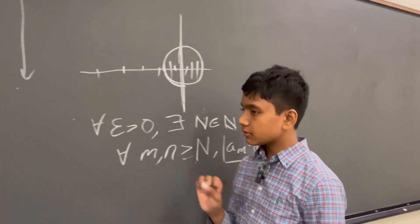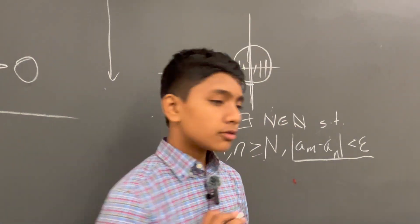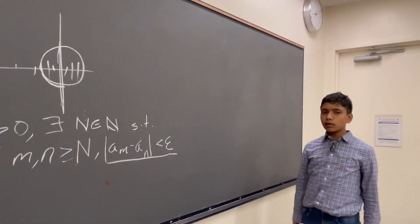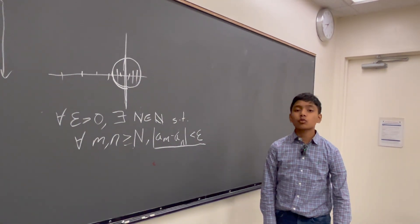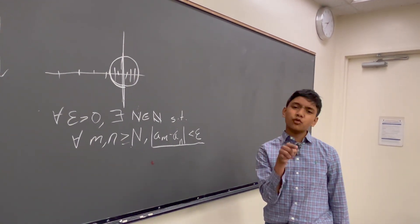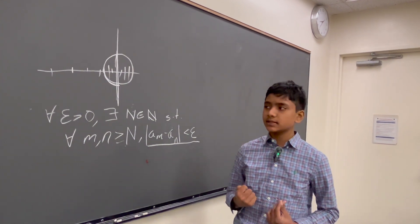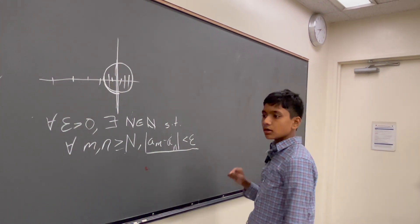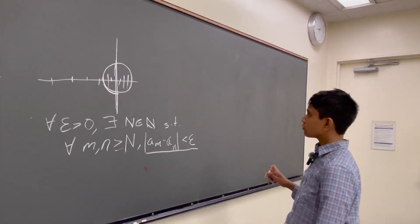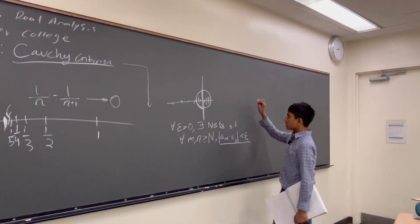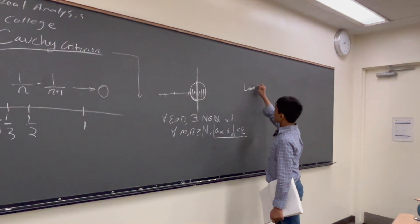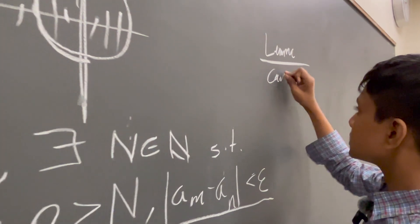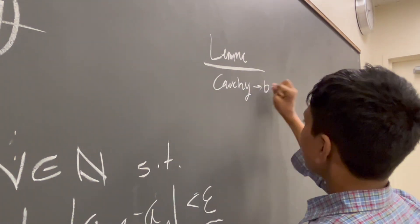This is very, very important. Now, this is — and you probably trust me on this — an alternate definition for convergence. But how do we know that? We prove so many theorems using convergence. Can we prove that the Cauchy Criterion is equivalent to convergence? Well, here's what we're going to do. First, we're going to prove a lemma to help us. This lemma is that every Cauchy sequence is implied to be bounded.